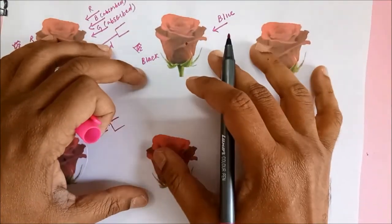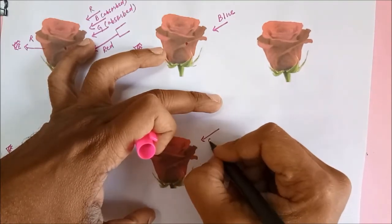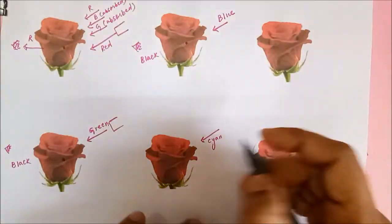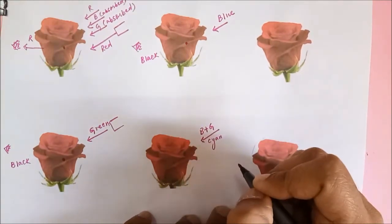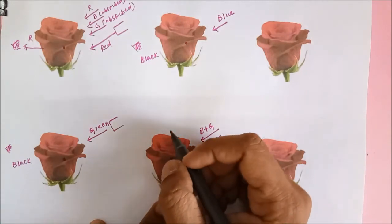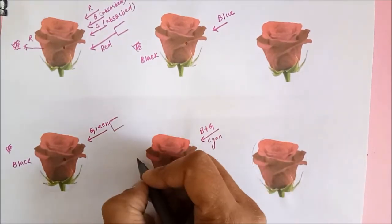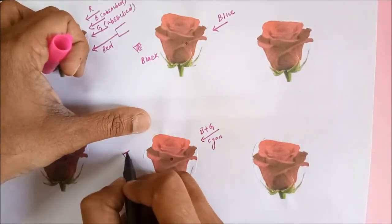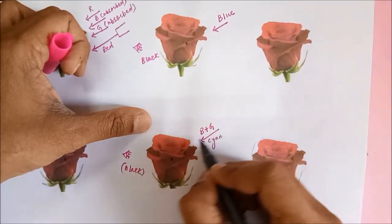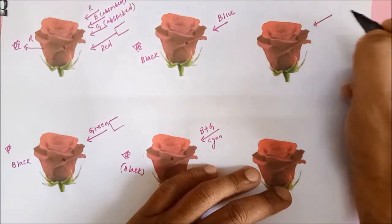Now let's talk about the secondary colors. Let's impart cyan light on the red rose. Cyan is made up of blue and green, so blue plus green light is imparted. The pigments present in the red rose are going to absorb both blue and green light. Nothing is going to get reflected, so the human eye receives no color and you see black. In cyan light, the red rose appears black.